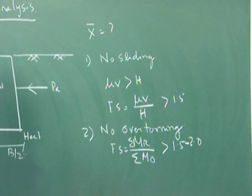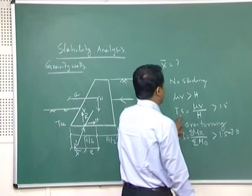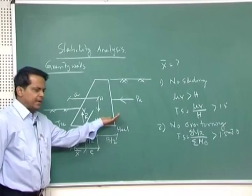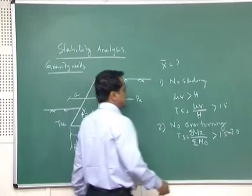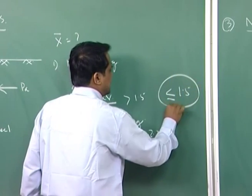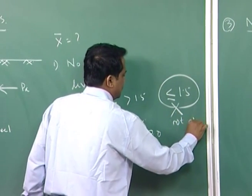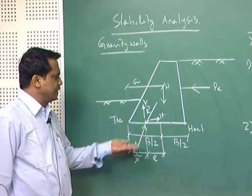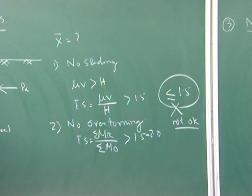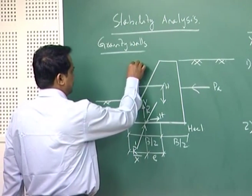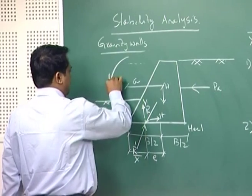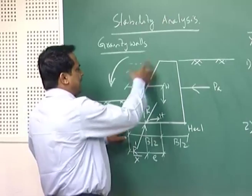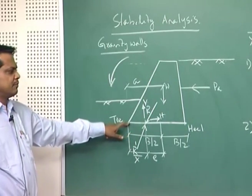The first check is no sliding. If the factor of safety is less than or equal to 1.5, this design is not okay — the retaining wall will entirely move at the base. The remedy is to provide a shear key at the toe or at an intermediate position below the base. For no overturning, the moment of resistance should be greater than the moment of overturning, and the factor of safety should be 1.5 to 2. If it is less, the retaining wall will topple along the toe — rotating as a whole body about the toe.